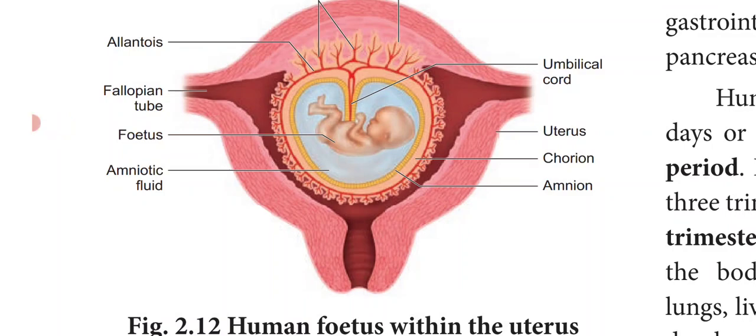The first trimester is the main period of organogenesis. What is organogenesis? That is the formation of organs. The body organs namely the heart, limbs, lungs, liver and external genital organs are all well developed in the first 3 months.